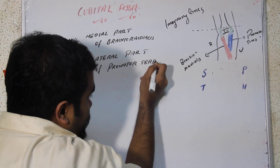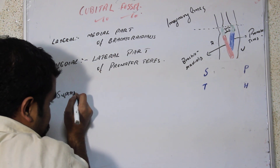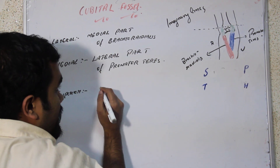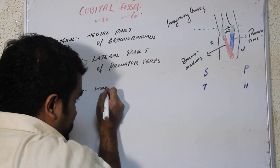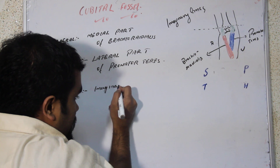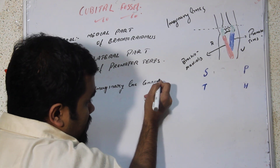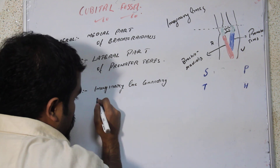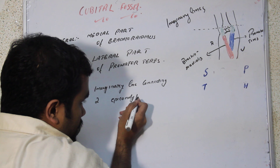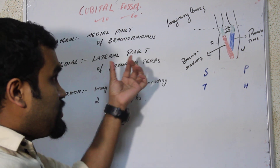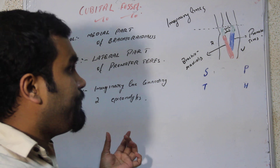The superior border is formed by the imaginary line connecting the two epicondyles. In this way, the cubital fossa is formed.